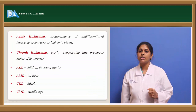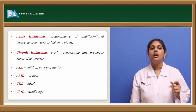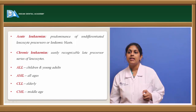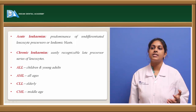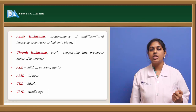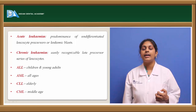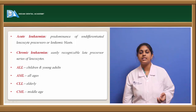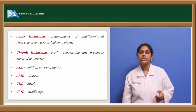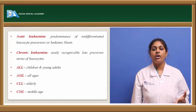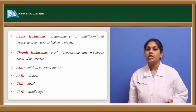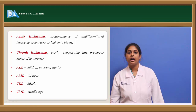Acute leukemias are characterized by predominant undifferentiated leukocytes or precursors, also known as leukemic blasts. These include acute lymphoblastic leukemia and acute myeloid leukemia. Acute lymphocytic or lymphoblastic leukemia most commonly occurs in children and young adults, whereas acute myeloid leukemia occurs in all age groups. Chronic leukemias involve recognizable late precursors and are classified into chronic lymphocytic leukemia and chronic myeloid leukemia.